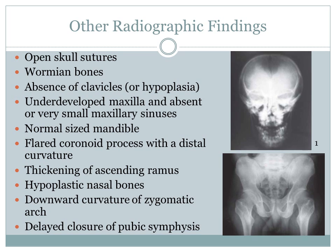Additional radiographic findings include open skull sutures, wormian bones, absence of clavicles, underdeveloped maxilla with absent or very small maxillary sinuses, a normal-sized mandible, a flared coronoid process with distal curvature, thickening of the ascending ramus, hypoplastic nasal bones, a downward curvature of the zygomatic arch, and delayed closure of the pubic symphysis.